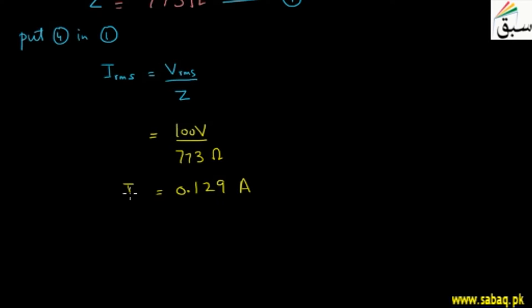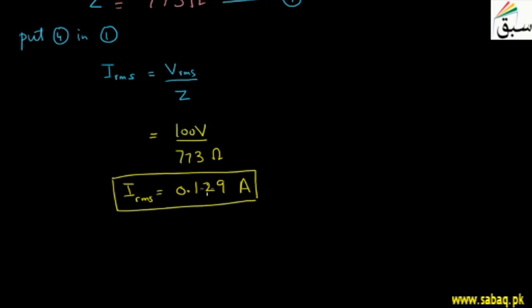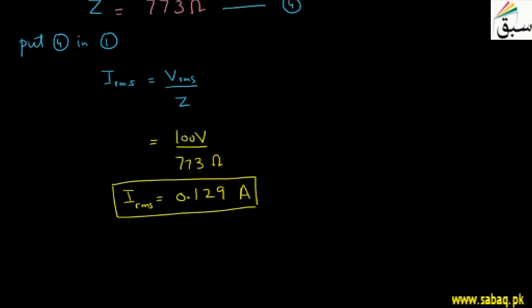So students, we have the first part of the question solved — the root mean square value of current in this circuit. Now let's move to the second part of the question.